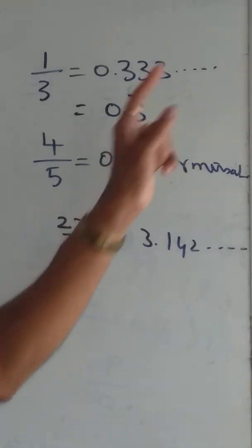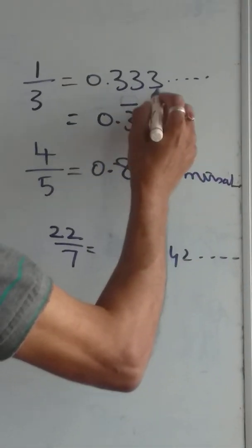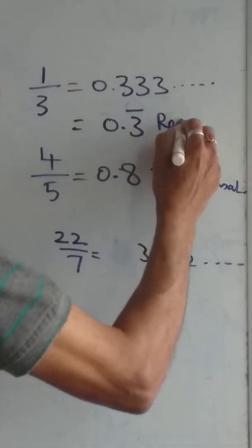But in these cases, 3 is repeatedly coming after dividing. These numbers we call recurring.